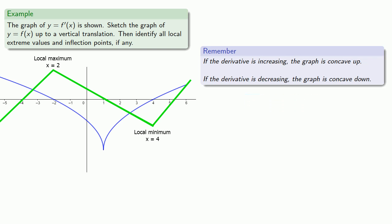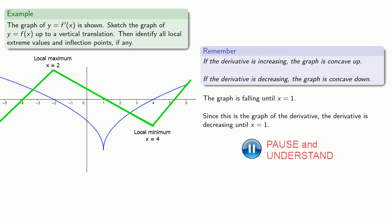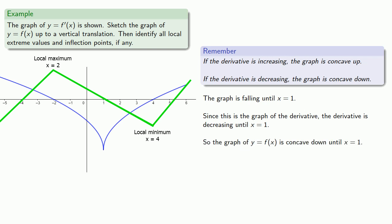We see that the graph is falling until x equals 1. Since this is the graph of the derivative, that says the derivative is decreasing until x equals 1. So that means the graph is concave down until x equals 1. Let's put in a marker and draw a concave down graph that roughly follows the skeleton until we hit the dotted line.